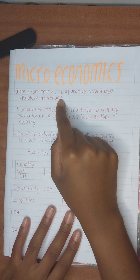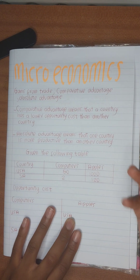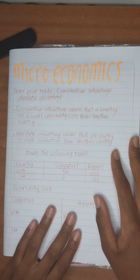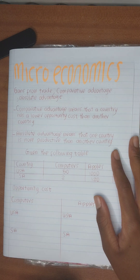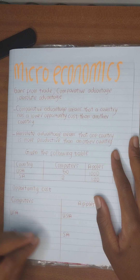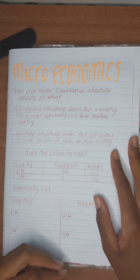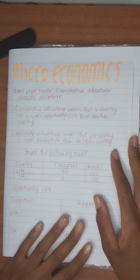The first thing we are going to do is define what comparative advantage means. Comparative advantage means that when you compare the opportunity cost of two countries, there is one country that has a lower opportunity cost compared to the other country. The country with the lowest opportunity cost is said to have a comparative advantage over that good or service.